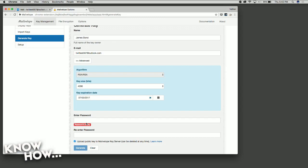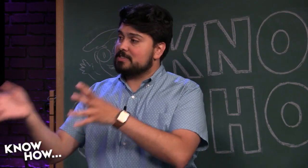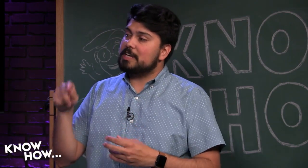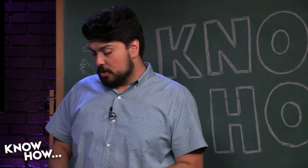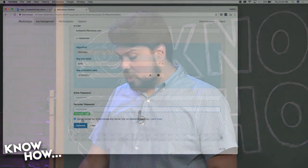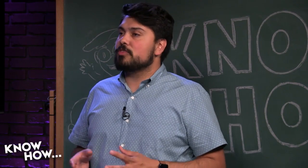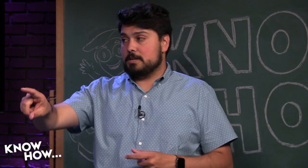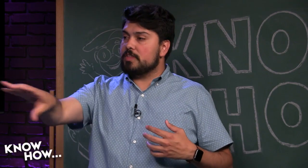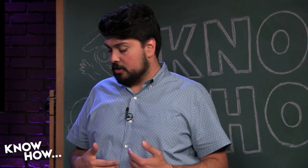You're going to need to create a password that you can remember that is secure for your access to that second key — just yours to decrypt any messages you get sent. I've created the password and I'm checking this box to upload my public key to the Mailvelop key server. This is something you can undo or delete at any moment.